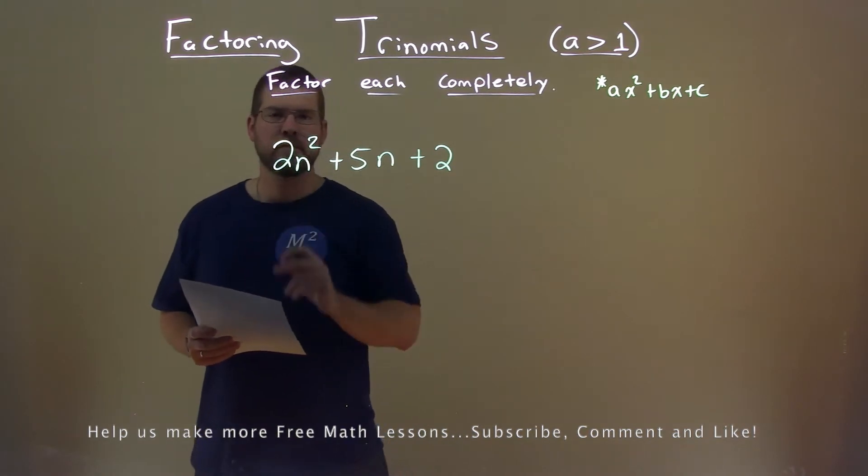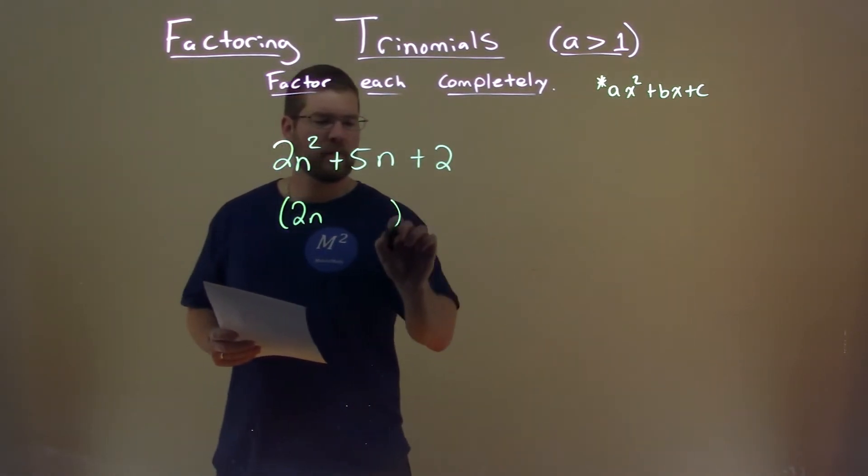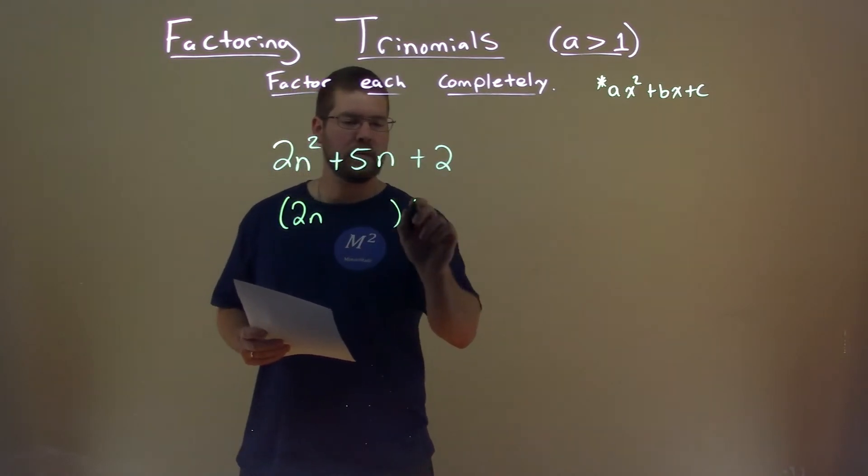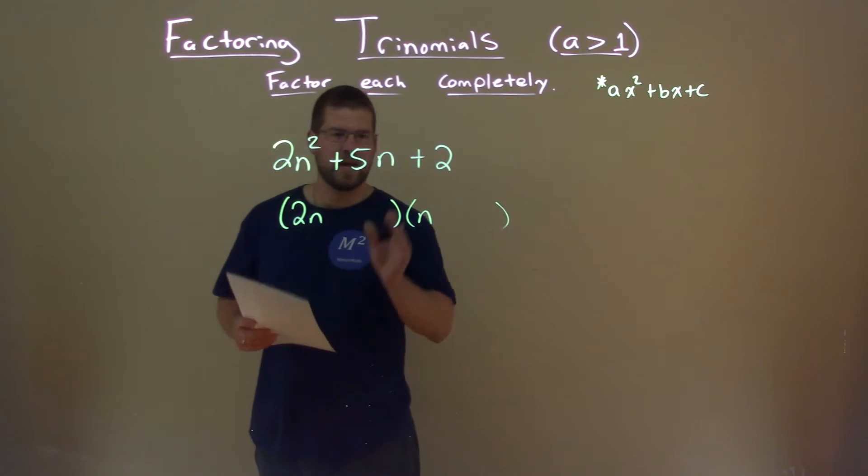Let's first look at the a value, 2. It's a prime number, meaning that this will be in some form of 2n plus or minus something times n plus or minus something else. So we have the basics here.